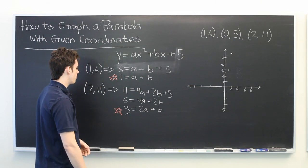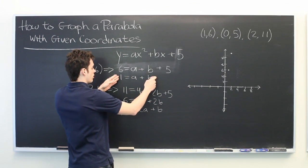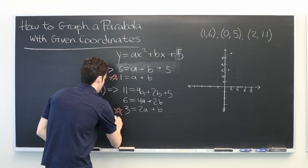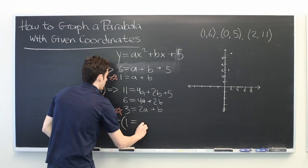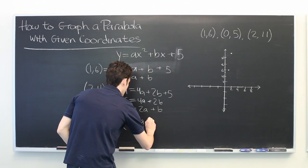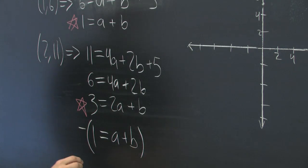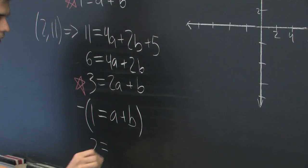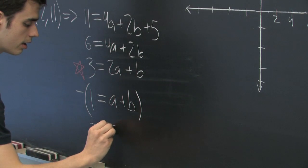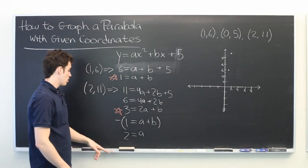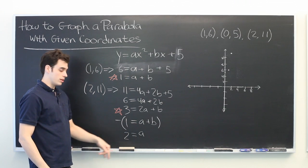So what we're going to do is take this equation and subtract it from this one. Minus 1 equals a plus b. And what does that give us? 3 minus 1 is 2. 2a minus a is a. And b minus b is 0. So right off the bat, we see that 2 is equal to a.